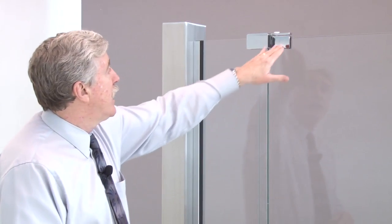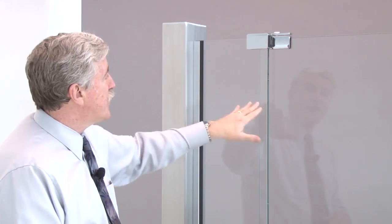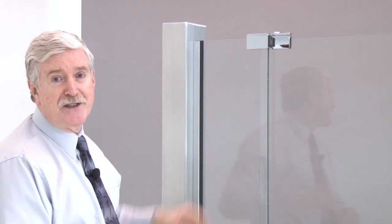There's no fabrication needed in the glass whatsoever. You don't have to put any holes or anything like that. And simply adjust the width of the entire system by how you adjust this overlap between the door glass and the side light channel.